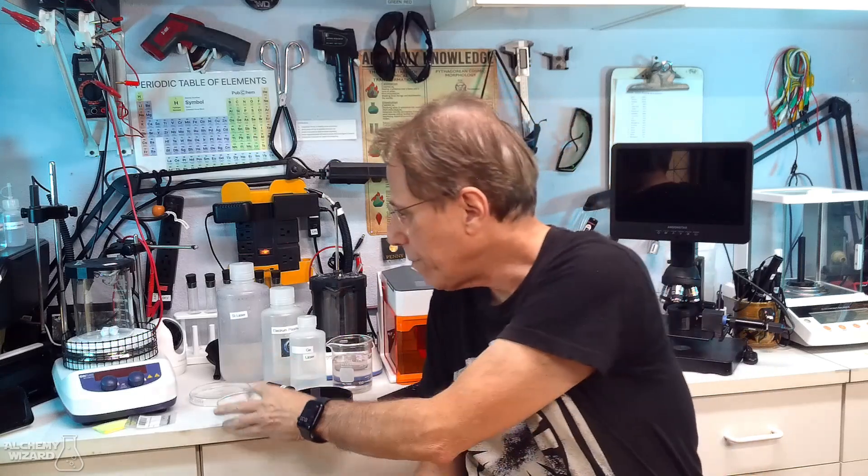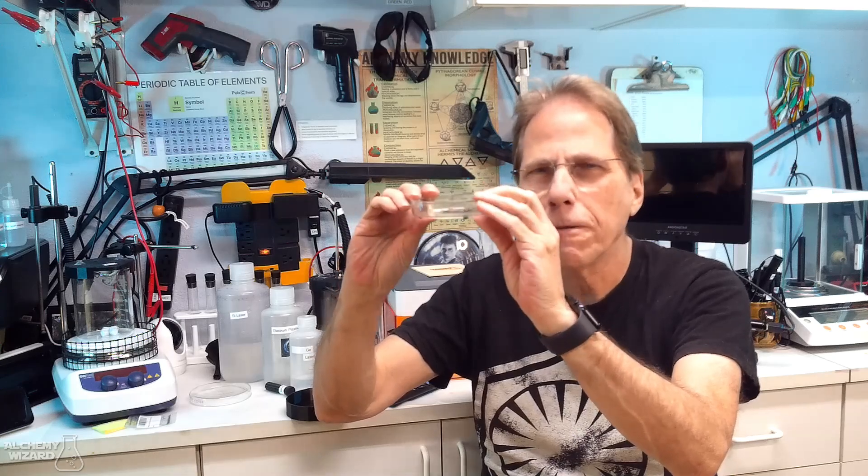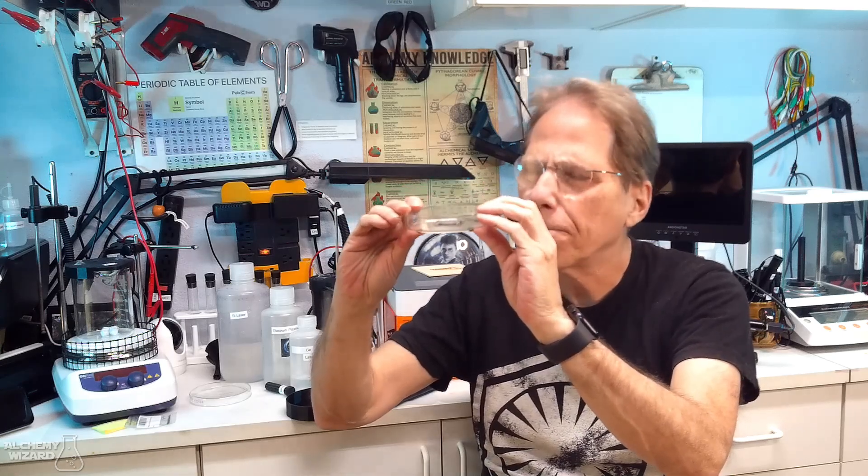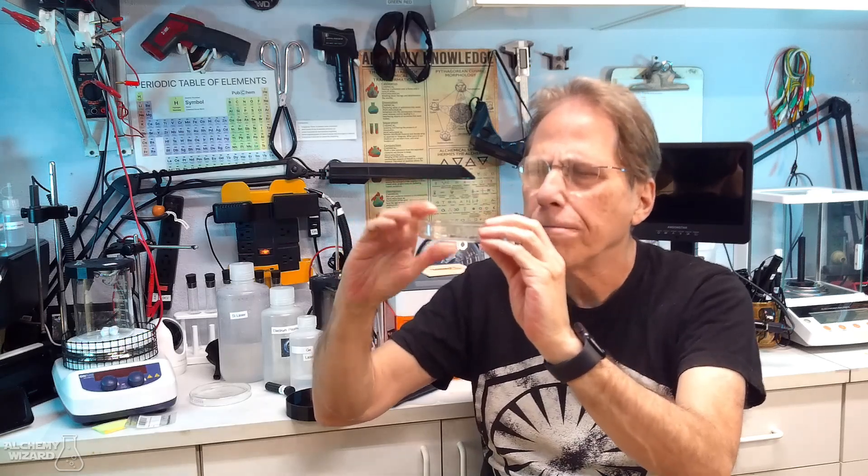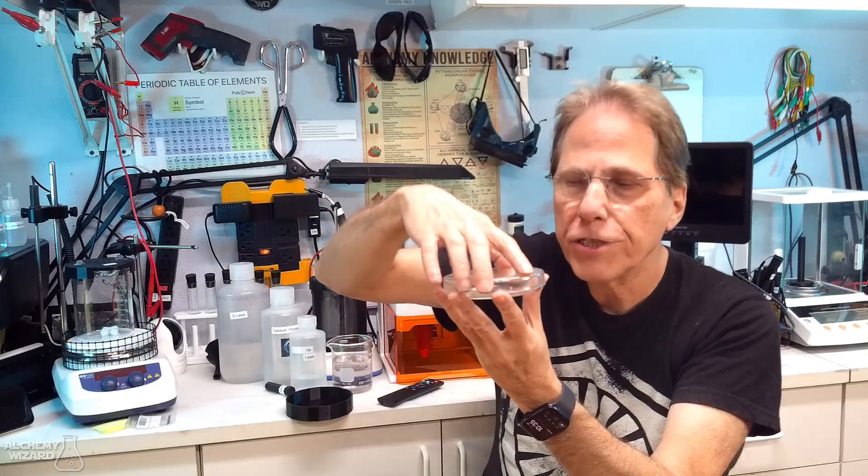Now when I make my nanoparticles or when we make nanoparticles with the laser, we will fill the petri dish. This is a 100mm petri dish. We will fill this up with 150ml of fluid, put our sample in here, and then run the laser on it. Now I like to put the top on the petri dish.